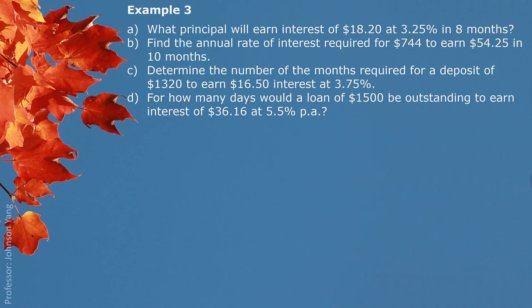Example 3: we have the following conditions and solve each part. Part A: what principal will earn interest of $18.20 at 3.25% in 8 months? We use the alternative formula for principal: P equals I divided by RT. We put the information in, recognizing all values properly. The answer is $840 as principal.